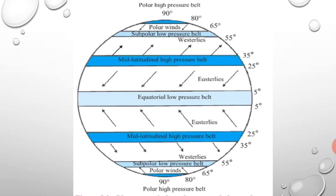The duration and intensity of sun rays varies during particular periods of the year in both hemispheres. The location of temperature zones and pressure belts depends on the sun's heat, and they also vary — shifting approximately 5° to 7° towards the north during Uttarayan and 5° to 7° towards the south during Dakshinayan. This is called the oscillation of pressure belts.